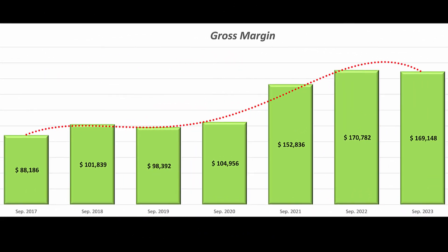The gross margin is experiencing a slight decrease of approximately 0.9%, suggesting a potential impact on the company's profitability. It's crucial to investigate the reasons behind this trend, whether due to changes in pricing strategies or shifts in cost structures.